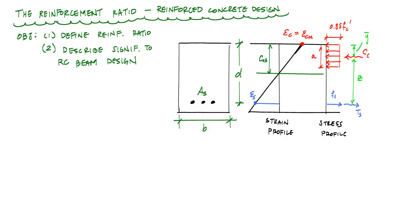The reinforcement ratio is the ratio of the area of steel to the area of concrete, expressed as b times d. The symbol ρ (rho) is used to express the reinforcement ratio. It's a way for us to compare various cross sections to one another in terms of the volume fraction or area fraction of steel that's within a cross section.